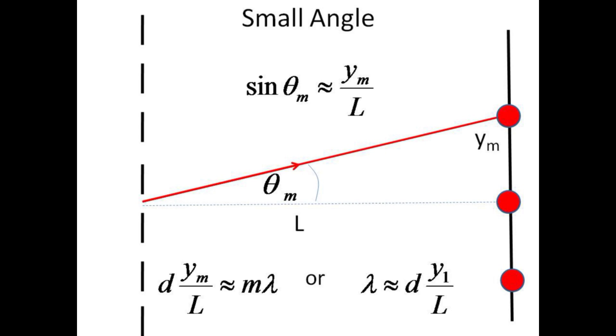Now we can use the small angle approximation such that the sine of the angle is close to y over L. The wavelength λ equals d times y divided by L. The setup is similar to that for the grating, except the distance L must be larger to make y measurable.